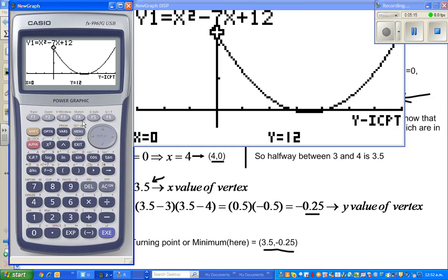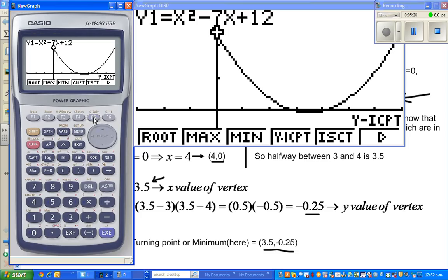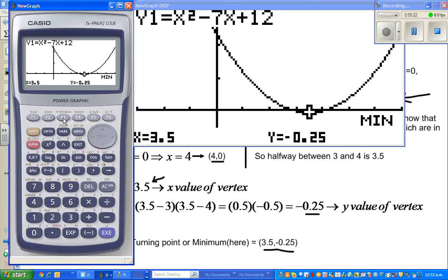And to find the minimum solve vertex, you go to solve, you press F3, which is (3.5, -0.25).